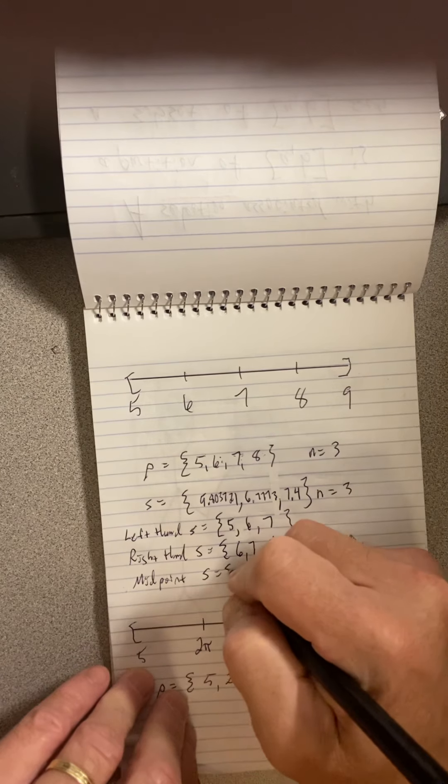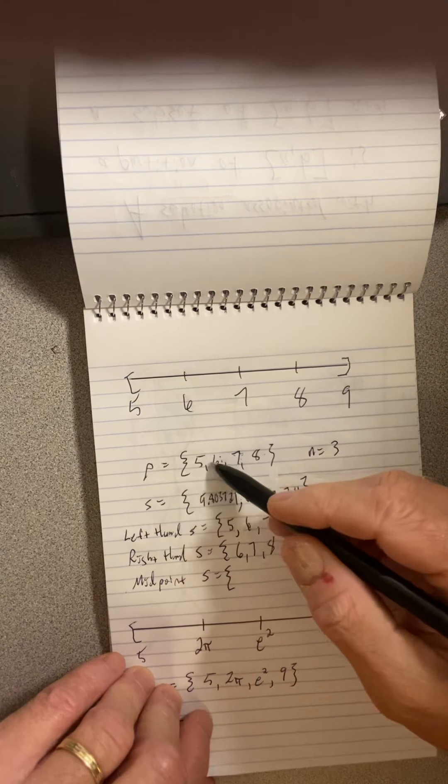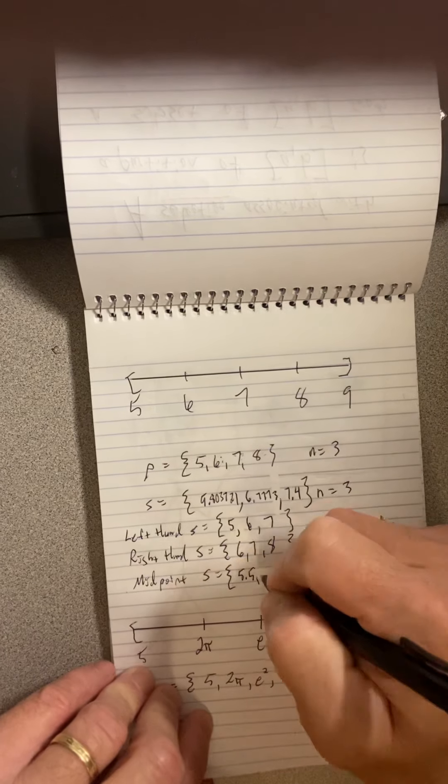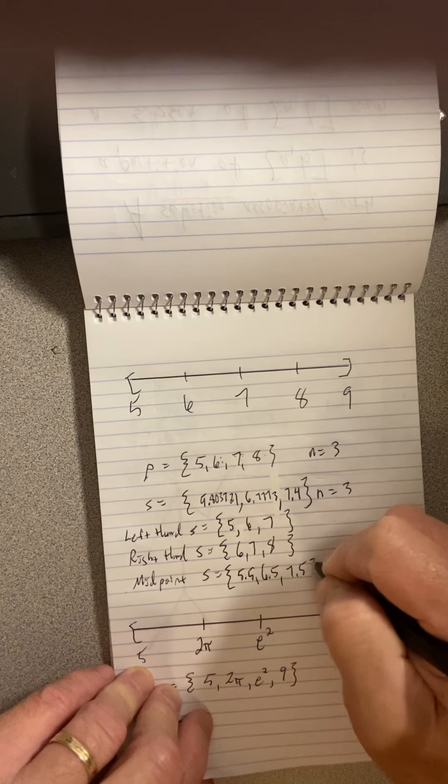Midpoint rule. What's the midpoint rule? Well, you always choose the midpoint. So from 5 to 6, I would choose 5.5. 6 to 7, 6.5. And 7 to 8, 7.5.